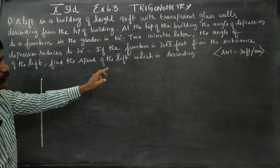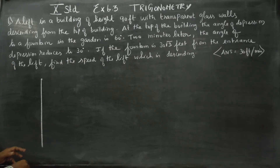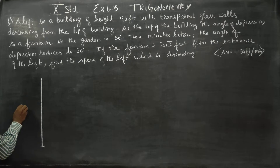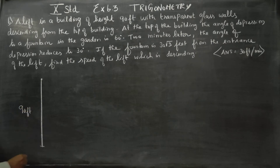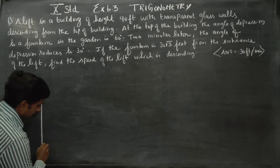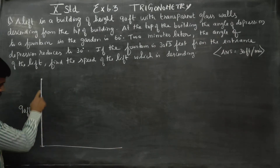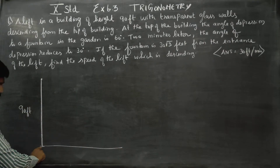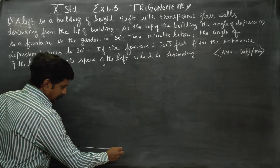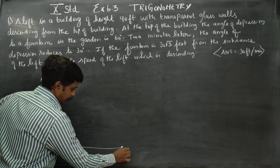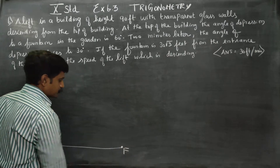Find the speed of the lift which is descending. The building height is 90 feet. This is the lift entrance. If you look at the entrance, there is a fountain — F for fountain.